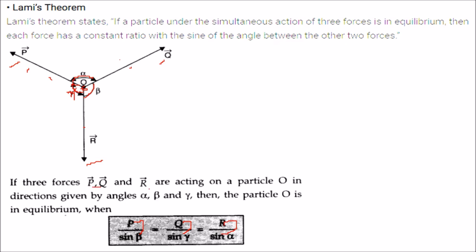So if three vectors P, Q, and R are acting on this particle O in directions given by angles alpha, beta, and gamma, then the particle O is in equilibrium.